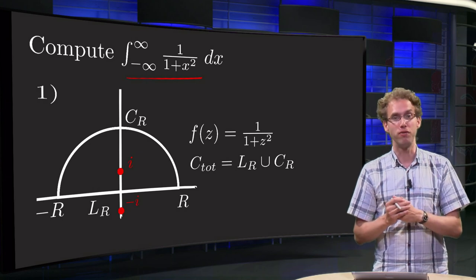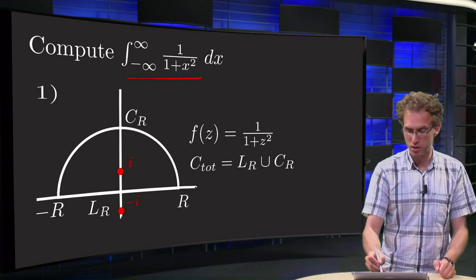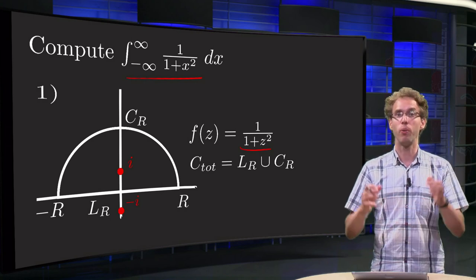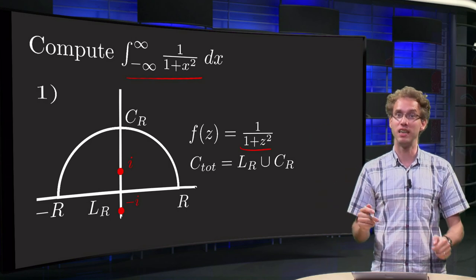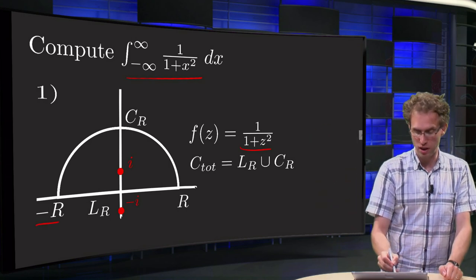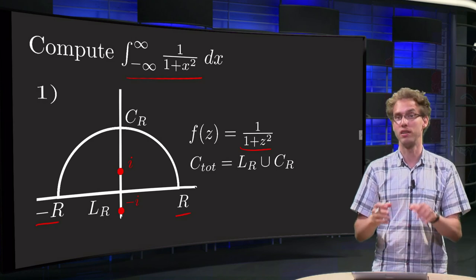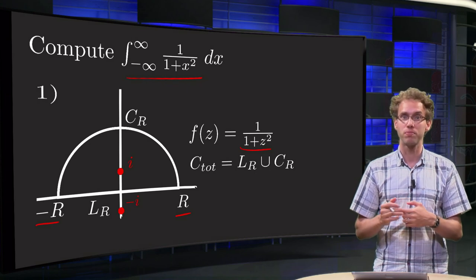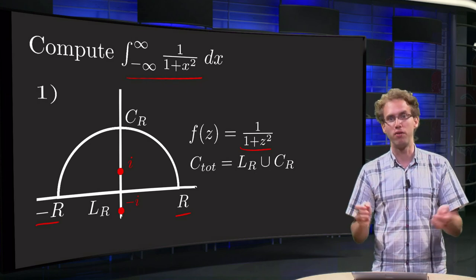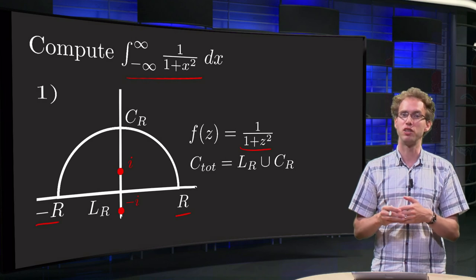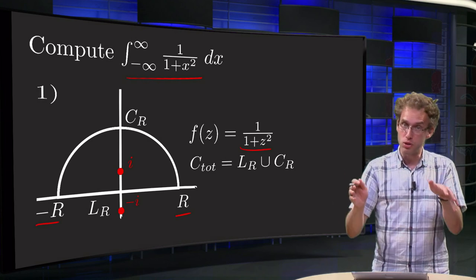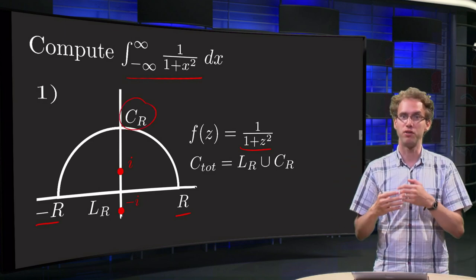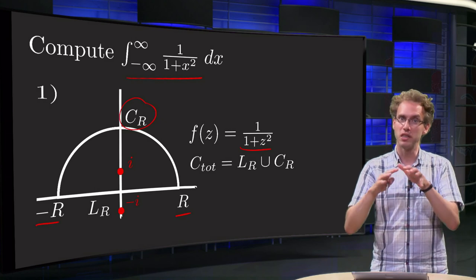First step: choose a function f(z). That's pretty obvious here—just take 1 over 1 plus z squared and choose an appropriate contour. Well, we want to have minus infinity to infinity in the end, so we can take from minus R to R first and then take later on R to infinity. Then we will have to close the contour in some way. We see that the function behaves like 1 over R squared if R becomes very large, so we can use an upper arc here.